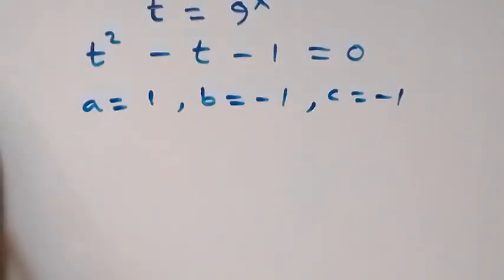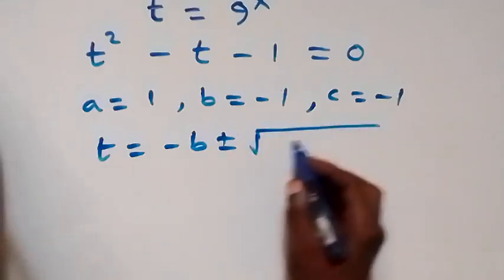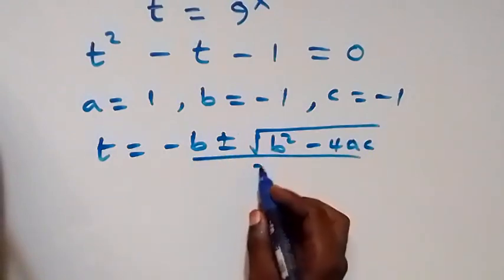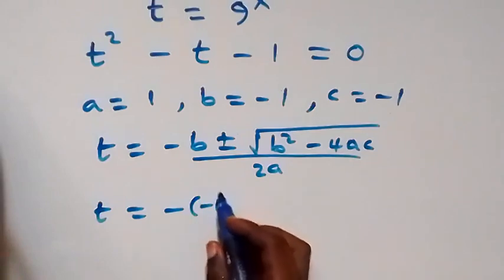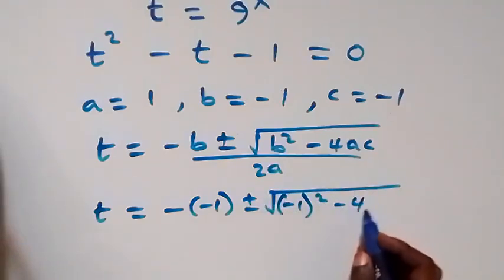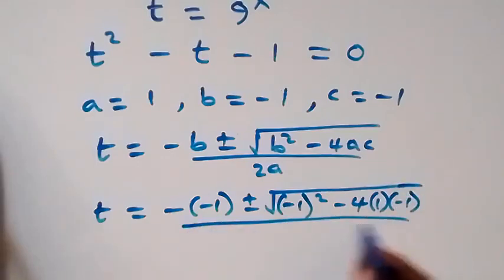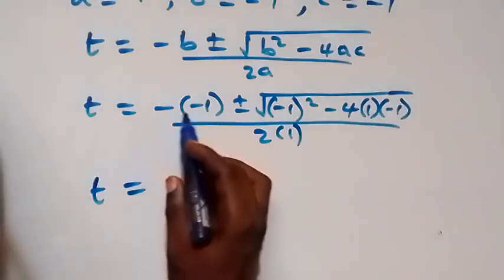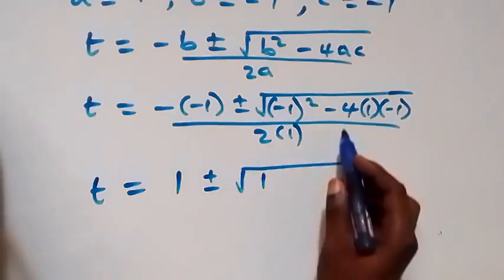Using the quadratic formula, t equals negative b plus or minus square root of b squared minus 4ac, all over 2a. Substituting: t equals negative of negative 1, plus or minus square root of negative 1 squared minus 4 times 1 times negative 1, over 2 times 1. Simplifying, that gives t equals 1 plus or minus square root of 1 plus 4, over 2.